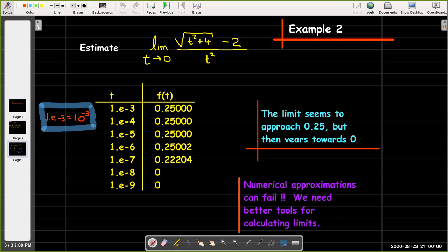But if I continue to get closer to 0 taking even smaller numbers suddenly I'm not exactly at 0.25. And in fact when I use 10 to the minus 7th for t I get 0.22204 different from 0.25. And then if I choose values even smaller I get 0.